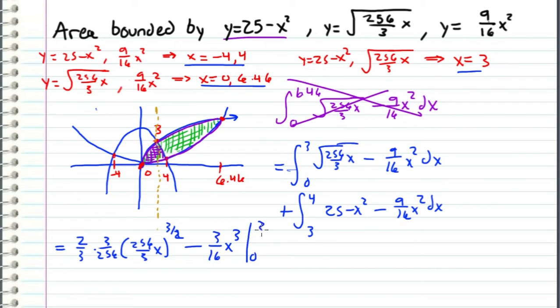And then minus 3 over 16 x cubed, all evaluated from 0 to 3. And then from the second part, we get plus 25x minus 1 third x cubed minus 9 over 64 x cubed, all evaluated from 3 to 4.